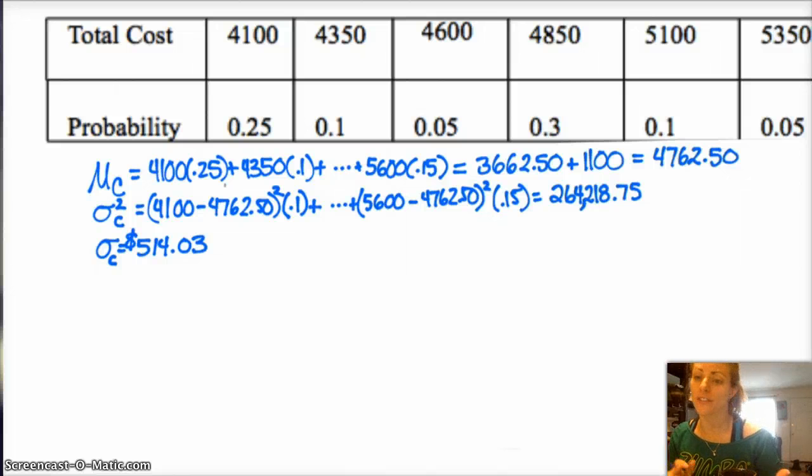So, if you do all the calculations, you'll find, sure enough, the mean increases by $1,100. So, the previous one was $3,662. And then add $1,100 to it, you get $4,762.50. Your standard deviation, your variance and your standard deviation stay the same.